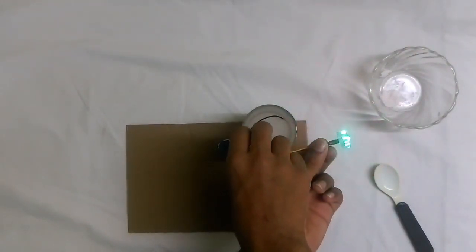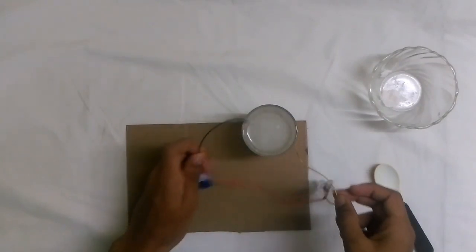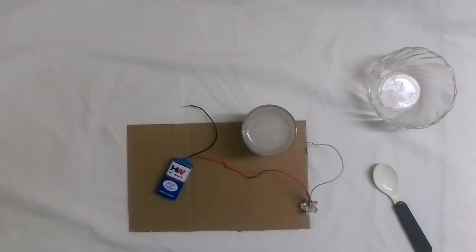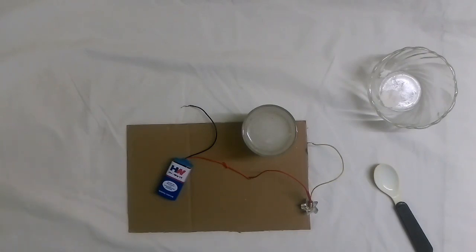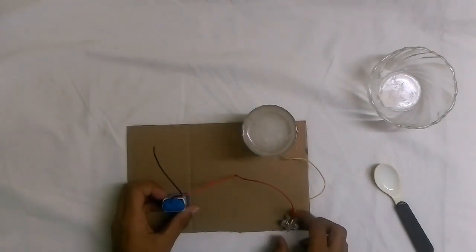This experiment shows that pure water is a bad conductor of electricity and salt water is a very good conductor of electricity. The observation is that the bulb glowed brightly only when salt was added to the solution.